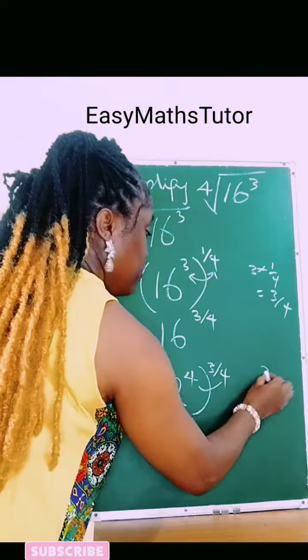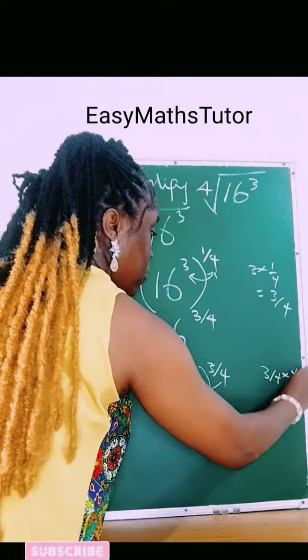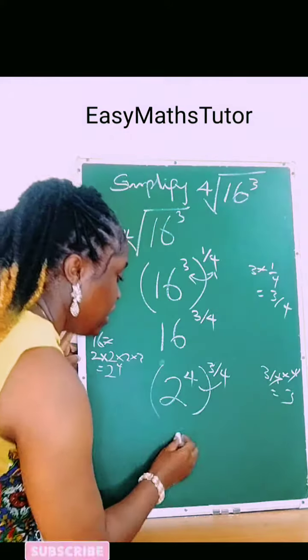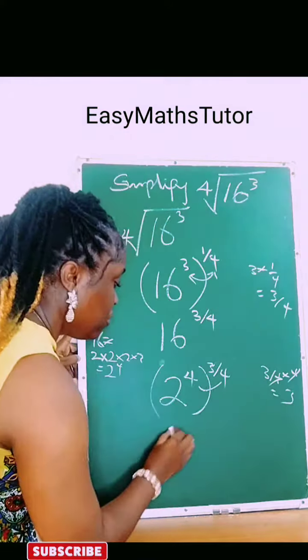once again, we'll have 3 over 4 times 4. This fourth will cancel out giving us 3. So our final answer will be 2 raised to power 3, which is also known as 8.